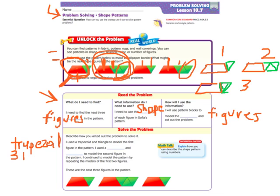And three triangles to model the second figure in the pattern. I continued to model the pattern by repeating the models of the first two figures. These are the next three figures in the pattern.